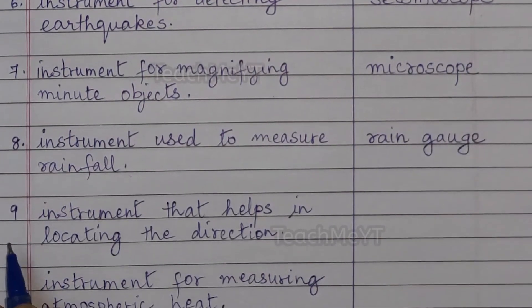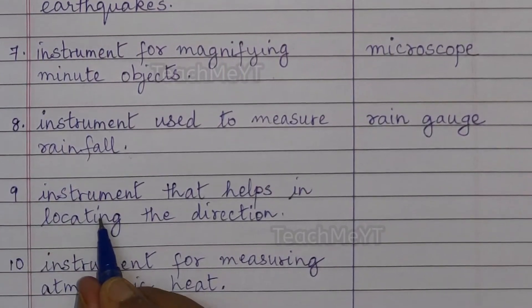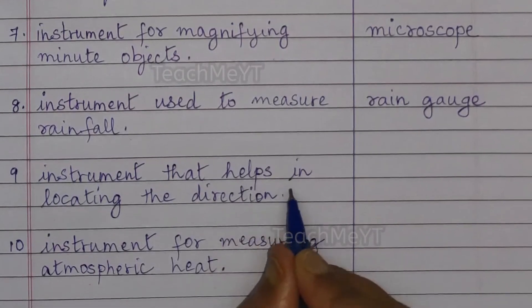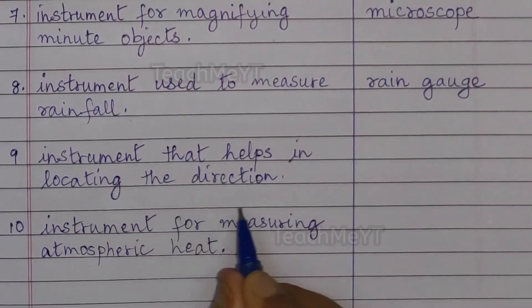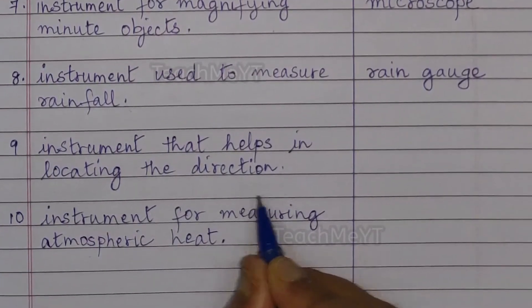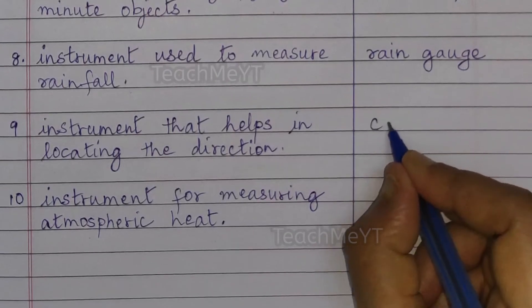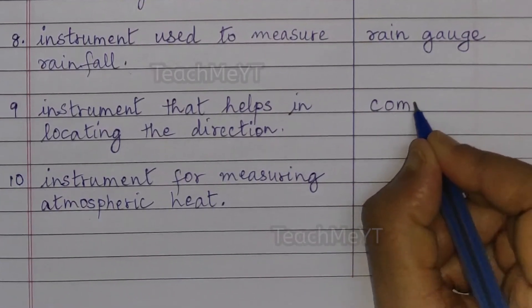Number 9. Instrument that helps in locating the direction is a compass.